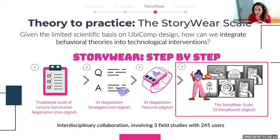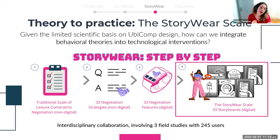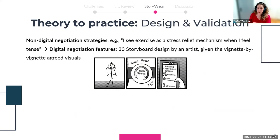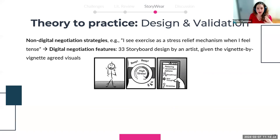We converted non-digital strategies into textual descriptions of digital ubicomp features, which we then converted into a novel storyboard format. This is a cross-university, cross-department collaboration between sports science and computer science departments of two universities, involving three field studies and 245 users in total. For example, the original non-digital scale had an item saying 'I see exercise as a stress relief mechanism when I feel tense' — following a well-defined methodology, we moved from this textual description to a visual description of a digital negotiation feature.